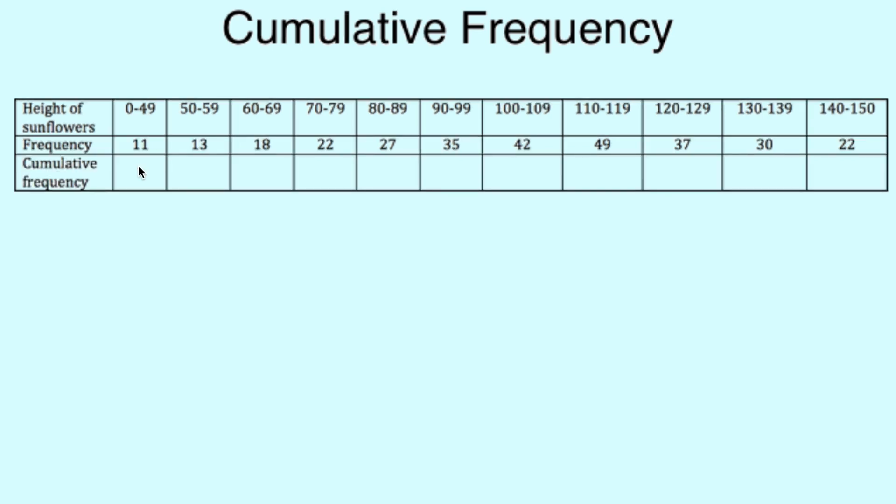After that, we have our next row in which we total up the frequency so far. So starting with 11 as our first result, the next box will be the total of the previous box plus the frequency of that column.